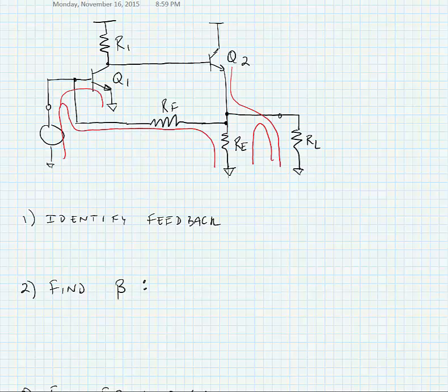We can either go through the feedback path or we can go through our amplifier circuit to get to ground. So this type of feedback, because we can go through either feedback or amplifier path at both the input and output, is a shunt-shunt feedback.